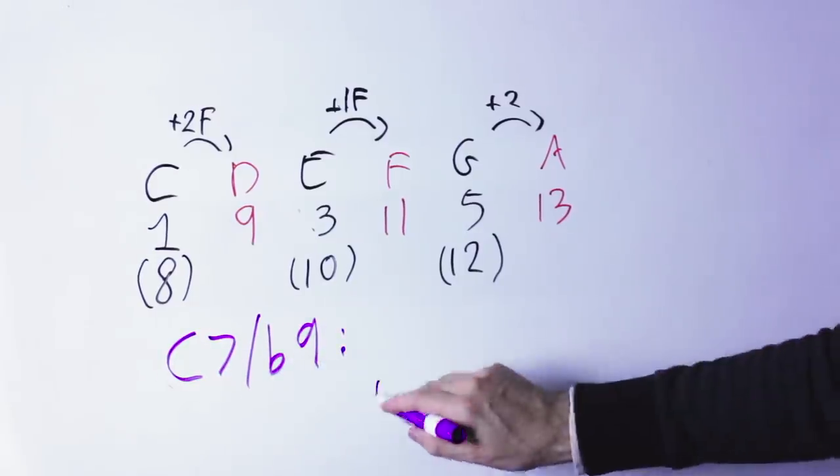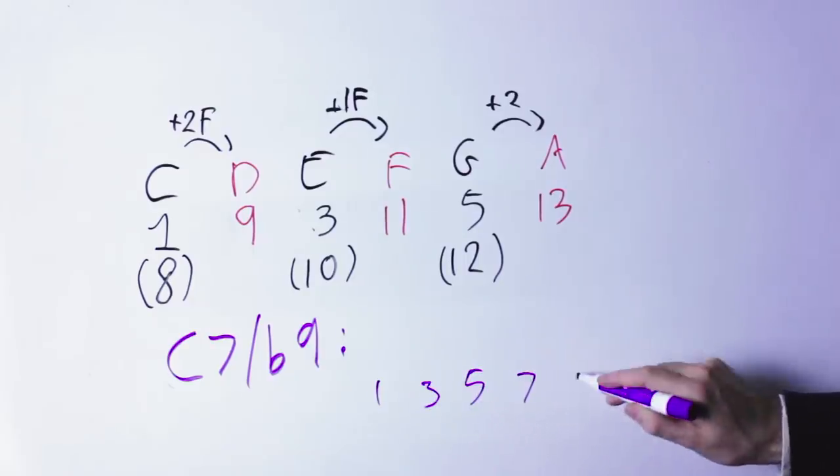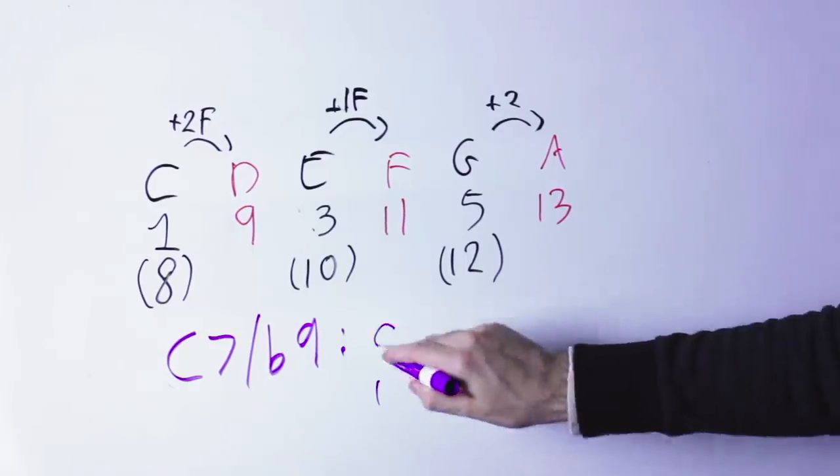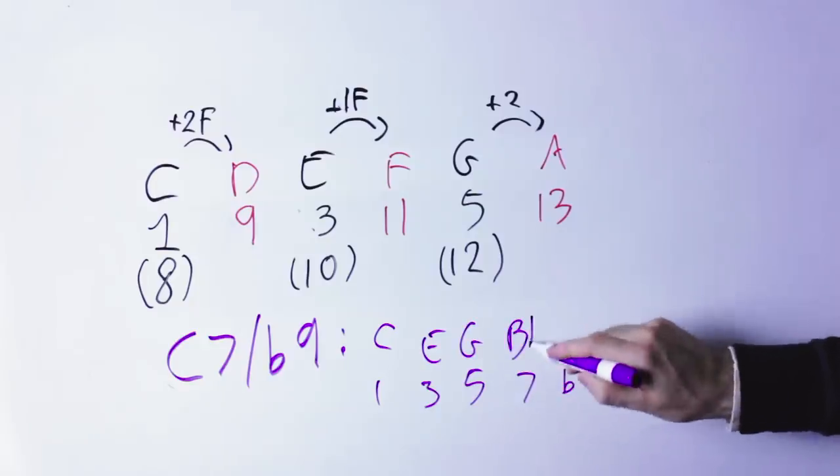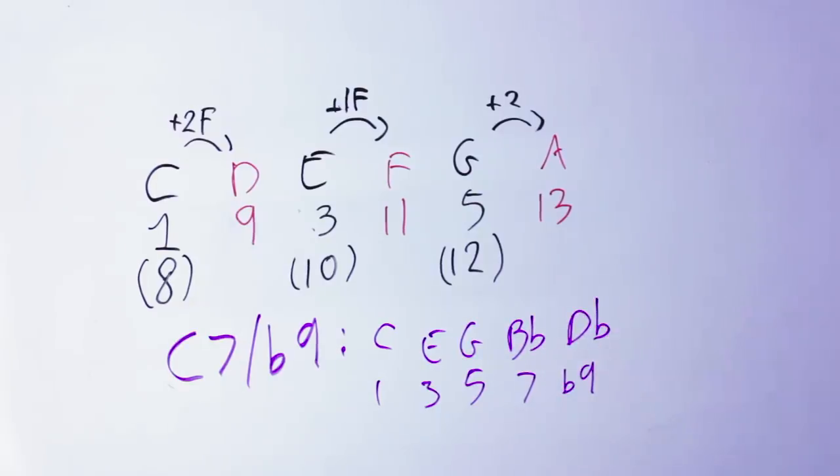rather than having a C nine, I can have a C seven with a flat nine. So I still put in the one, three, five, seven, and I put in the note that is one half step lower than the nine. So I have C, E, G, B flat, D flat,